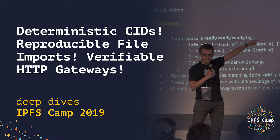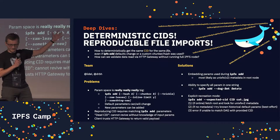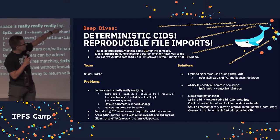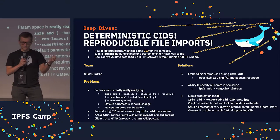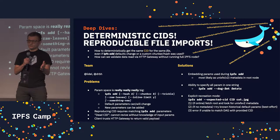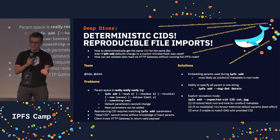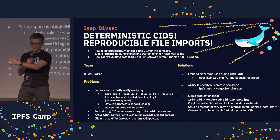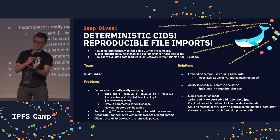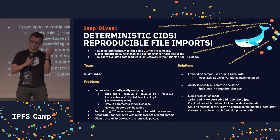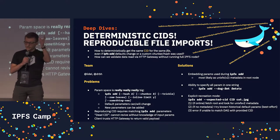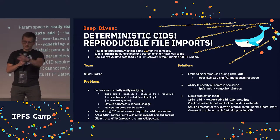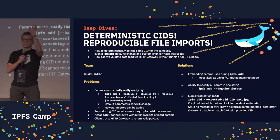I think it's better to show this like this — there's a CID at the very bottom. When you add content to IPFS, you basically use the IPFS add command and usually don't specify parameters, so there's a default set of parameters such as which hash to use, how we create the DAG, how we chunk the content, and how we assemble the entire DAG.